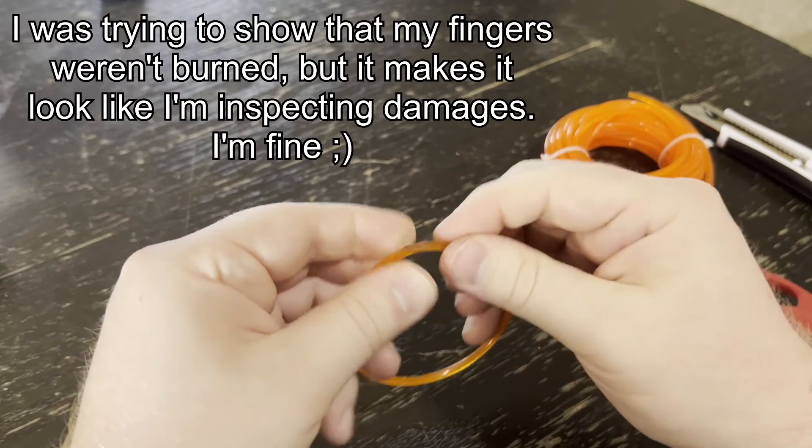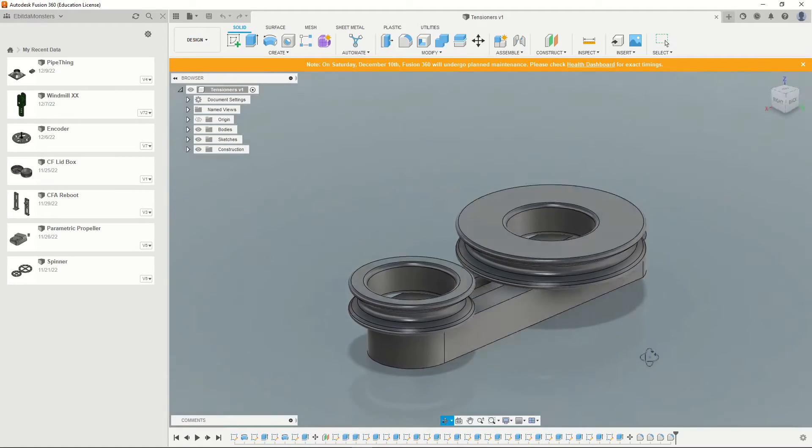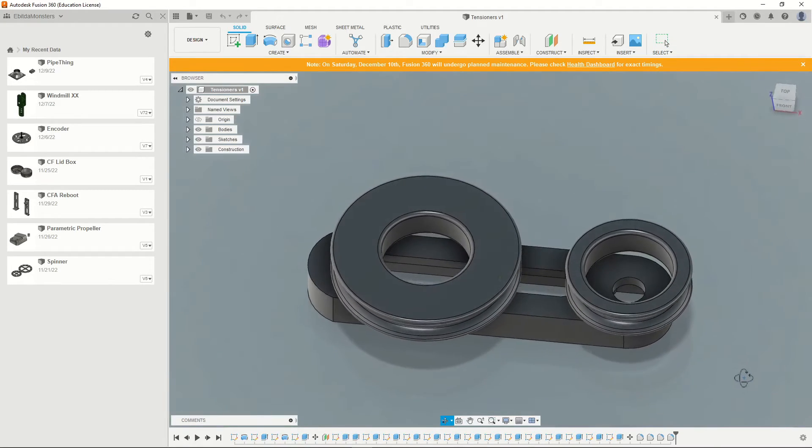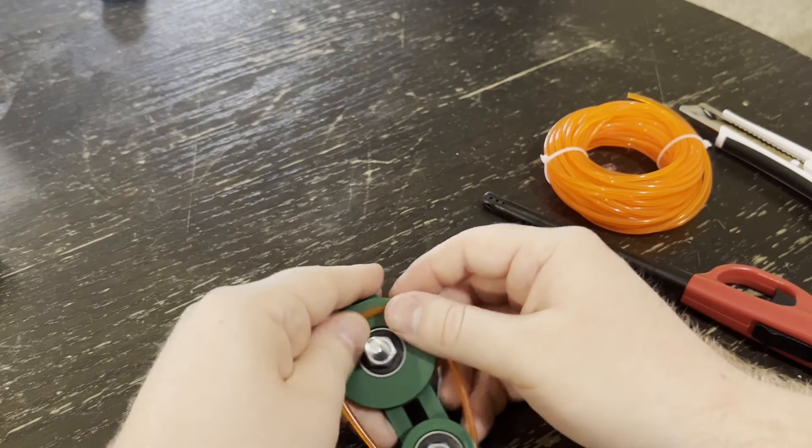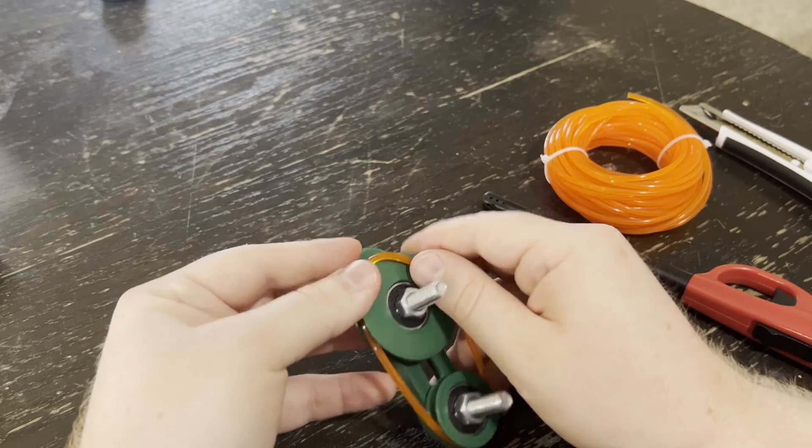I also have another video on my channel that details how to model these little pulleys and tensioners in CAD for 3D printing. I was originally going to put it in this video, but I figured that there's probably going to be a good amount of people that don't care about 3D printing and just want to see how to join the belts. So this video is going to end here.